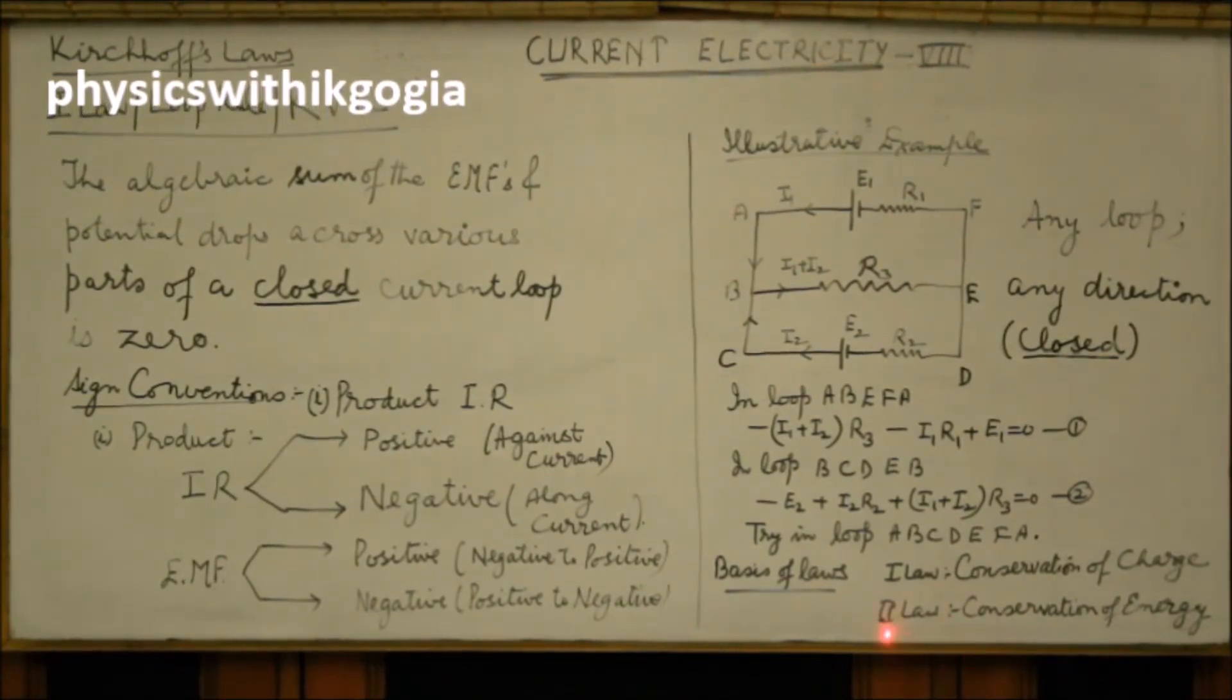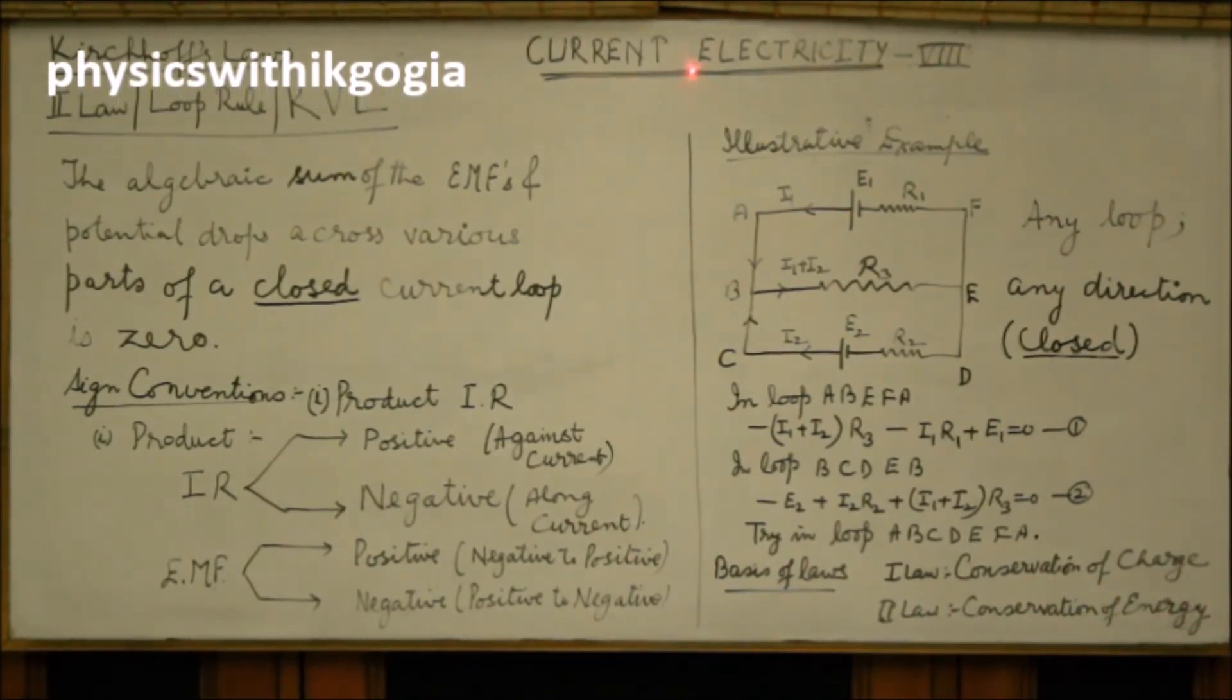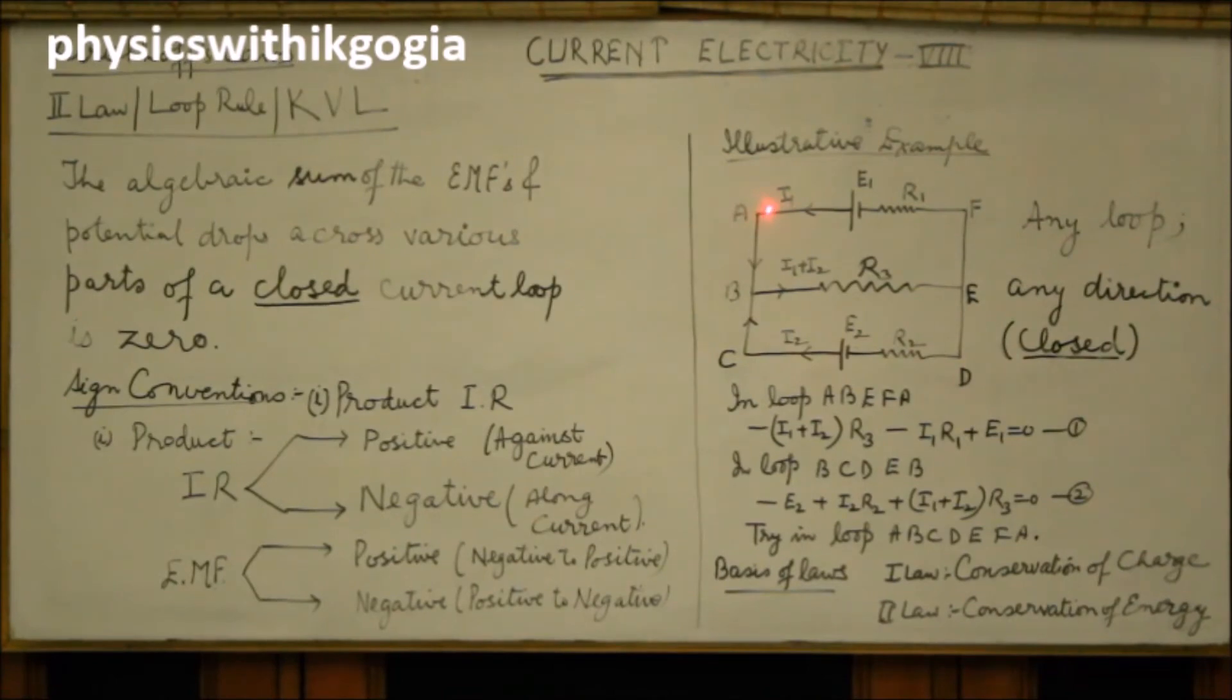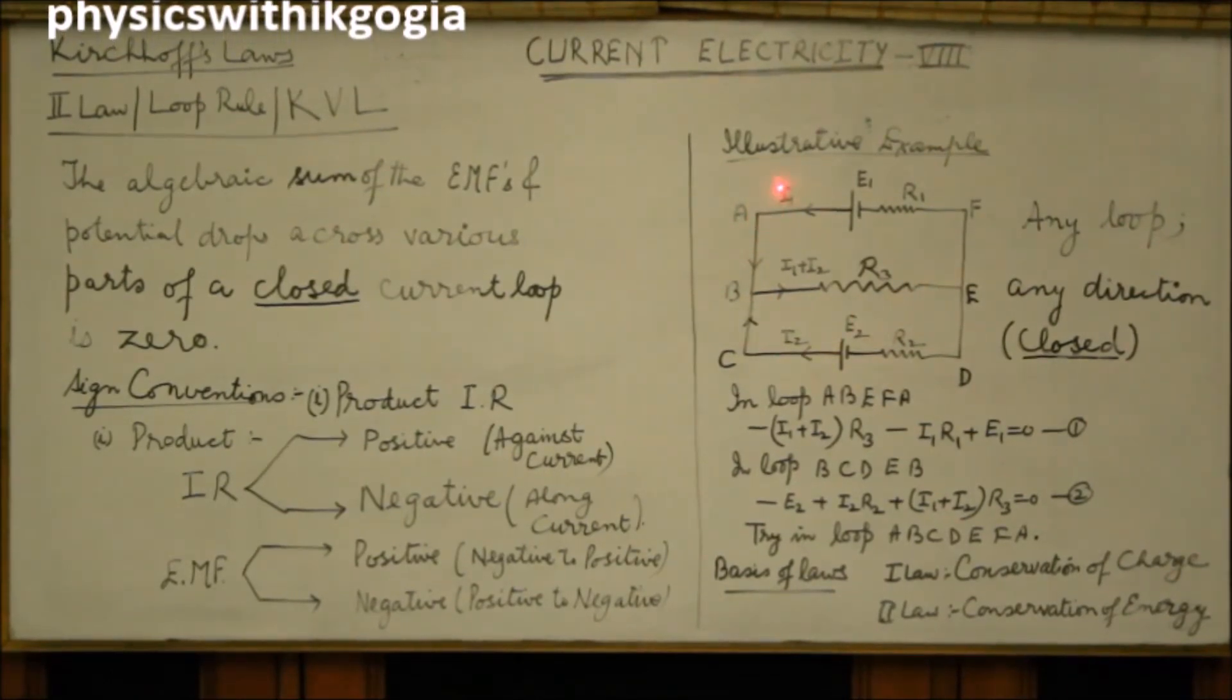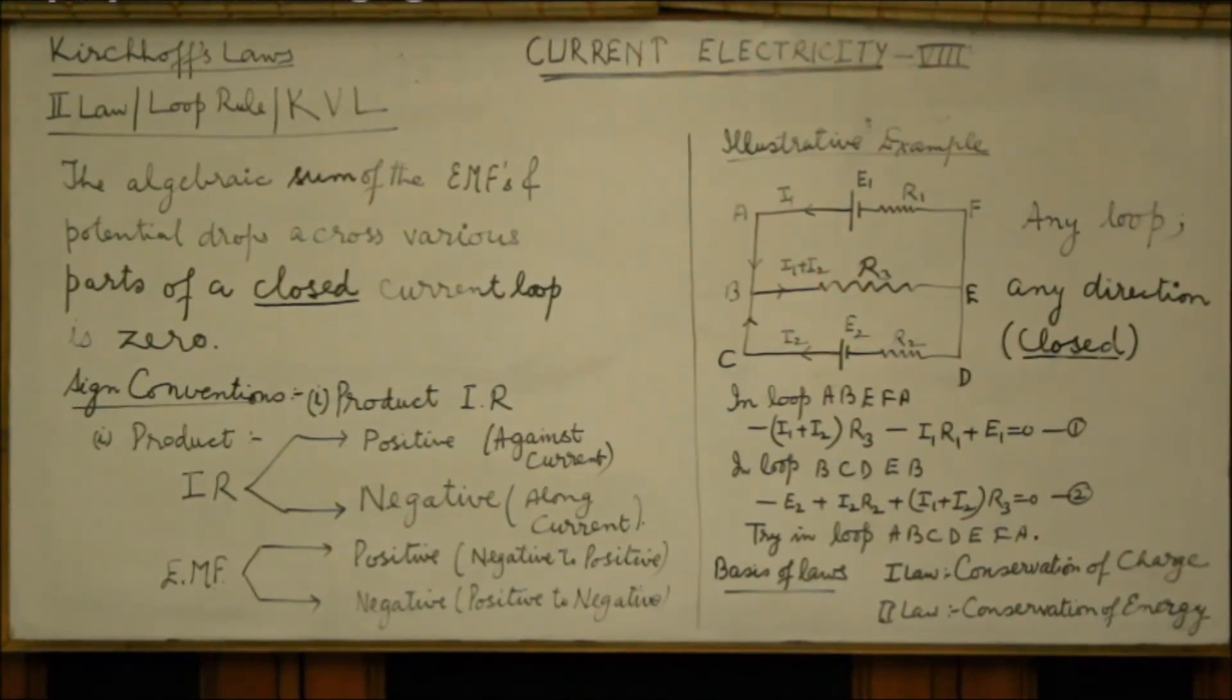Similarly, the second law is based on principle of conservation of energy. Because we are moving from A and back to A in a closed loop and potential difference therefore will be zero. If you move a charge Q from A to A, the work done will be zero. That is why the products IR added to the EMFs give you zero as the result. So, second law is based on principle of conservation of energy.